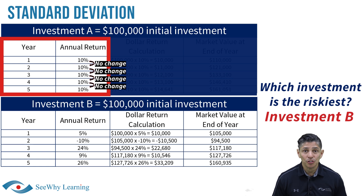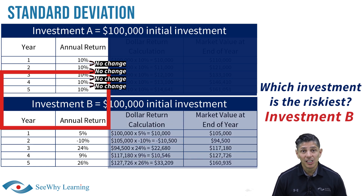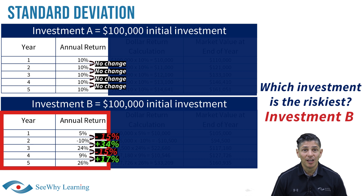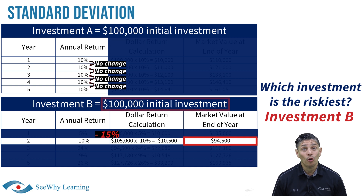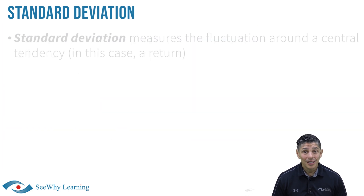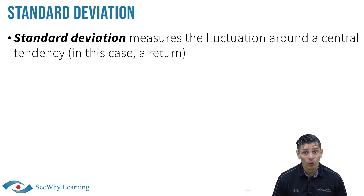Notice that investment A had a consistent return of 10% every single year — the annual return didn't deviate at all. Compare that to investment B, where the return deviated greatly from year to year. Many risk-averse investors would have panicked and liquidated the investment in year two when the negative return caused the market value to fall below the initial amount invested. In more technical terms, standard deviation measures the fluctuation around a central tendency — in this case, a return.